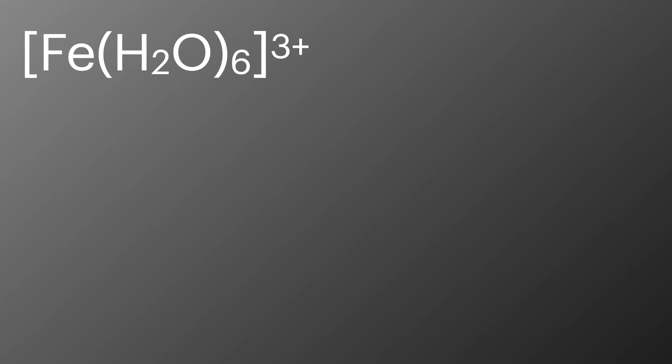With the iron three plus aqua complex you might see a variety of colours given to describe the solution. AQA lists it as purple and it is indeed purple if you look at it as a crystal form. However it's often seen as yellow or brown when it's in solution. When we react this with the hydroxide ions or ammonia the solution is hydrolyzed to form a brown precipitate.